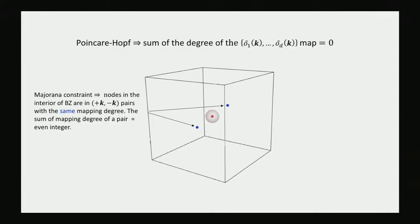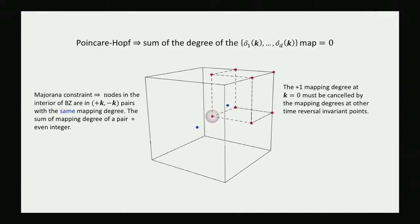The coefficient functions can have zeros in the interior of the Brillouin zone or at time-reversal invariant points. Due to the Majorana constraint, if there's a zero at k, there must be a zero at −k with exactly the same mapping degree. Therefore, zeros in the interior of the Brillouin zone contribute an even total mapping degree. Since the node at the origin contributes degree 1, this must be canceled by odd mapping degree at at least one other time-reversal invariant point.